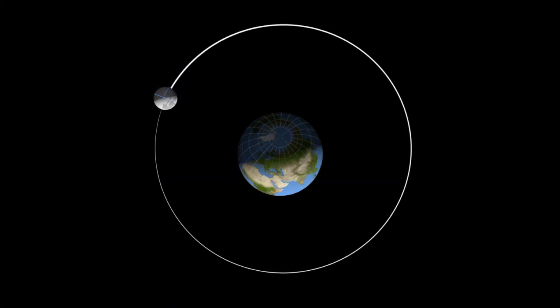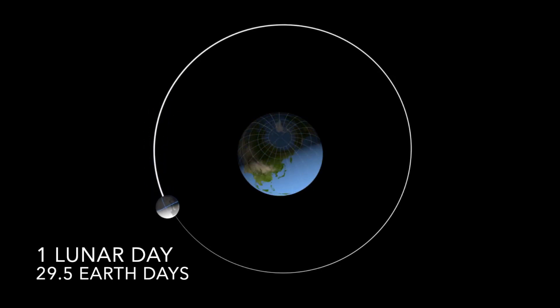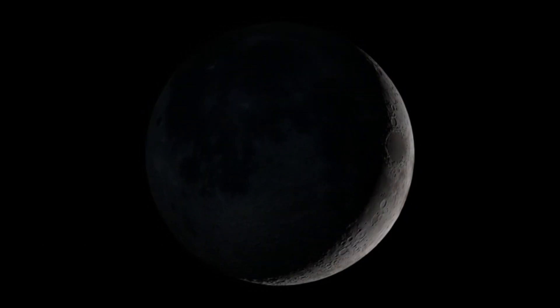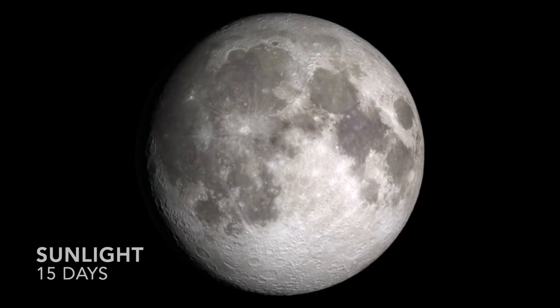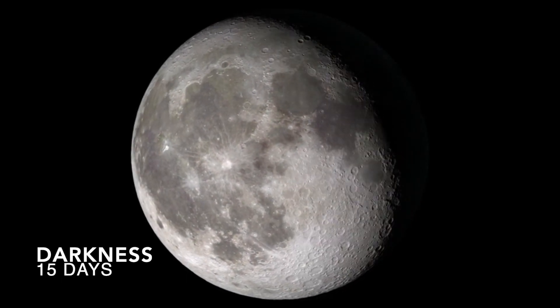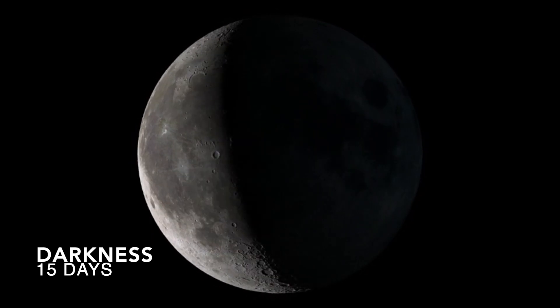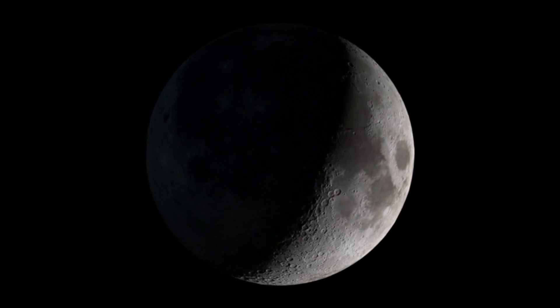Our Moon rotates very slowly on its axis, once about every 29 and a half Earth days. This slow rotation means the surface of the Moon is in the Sun for 15 Earth days and in the dark for another 15 Earth days. Without an atmosphere to act like a blanket, this creates some extreme temperature differences.